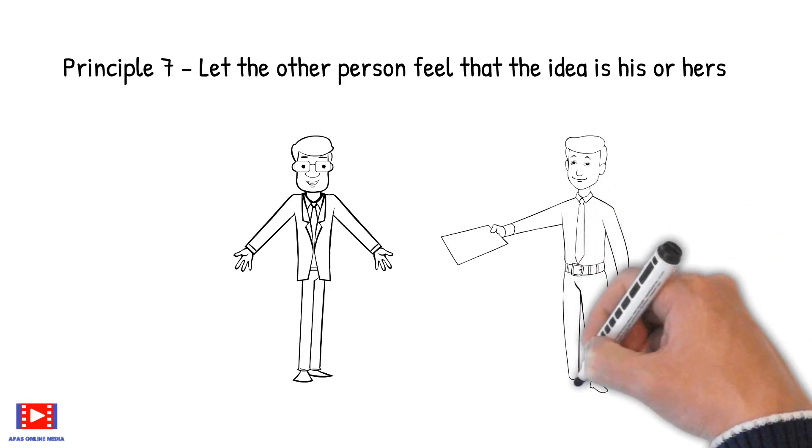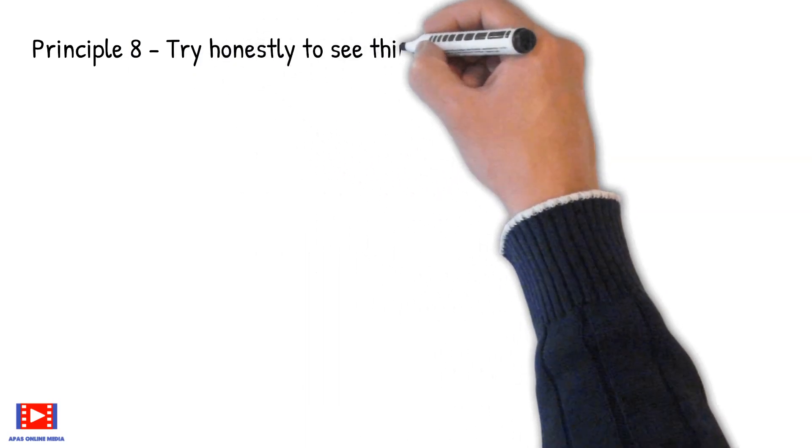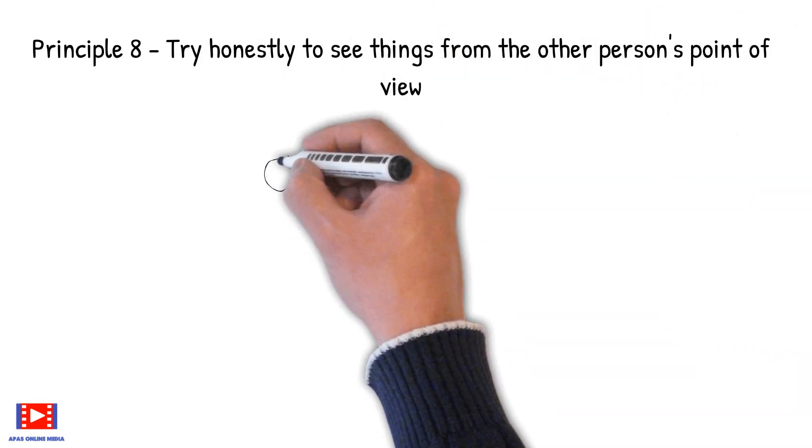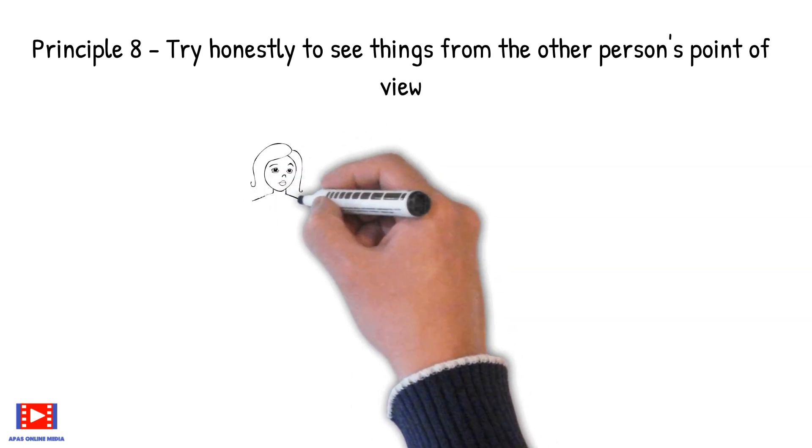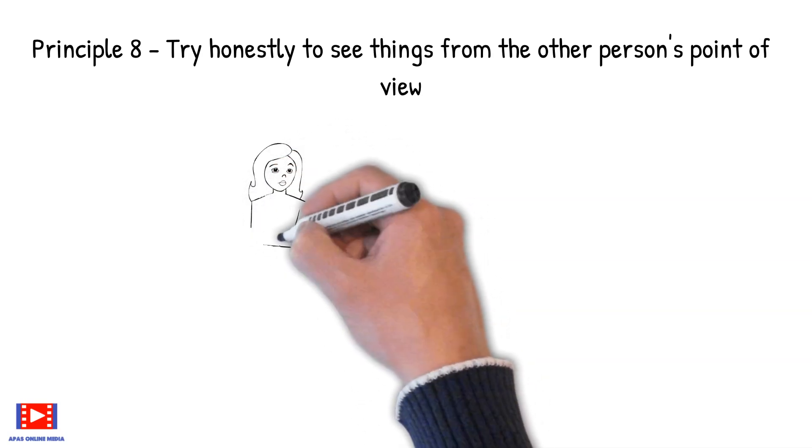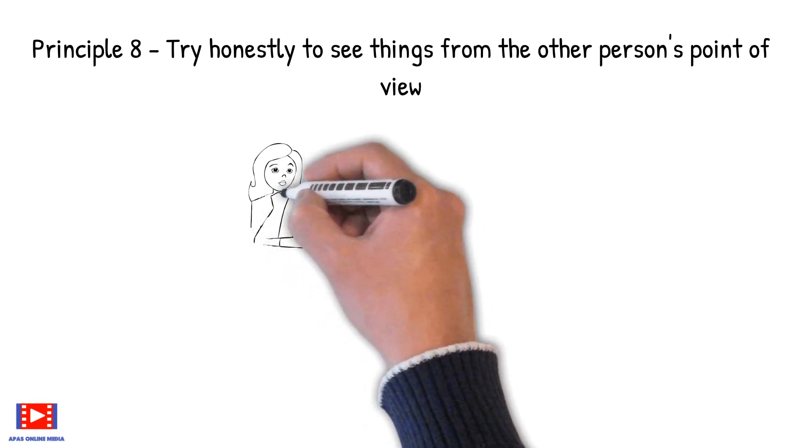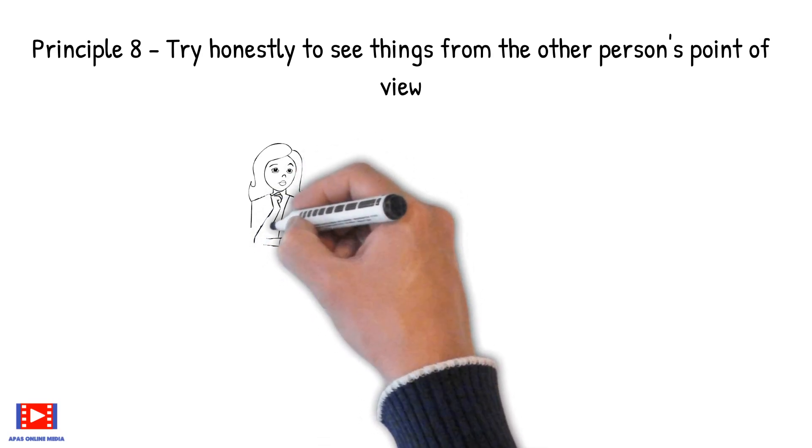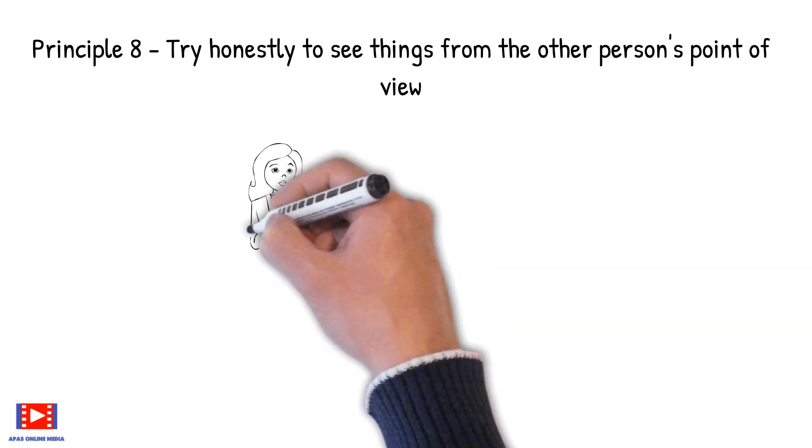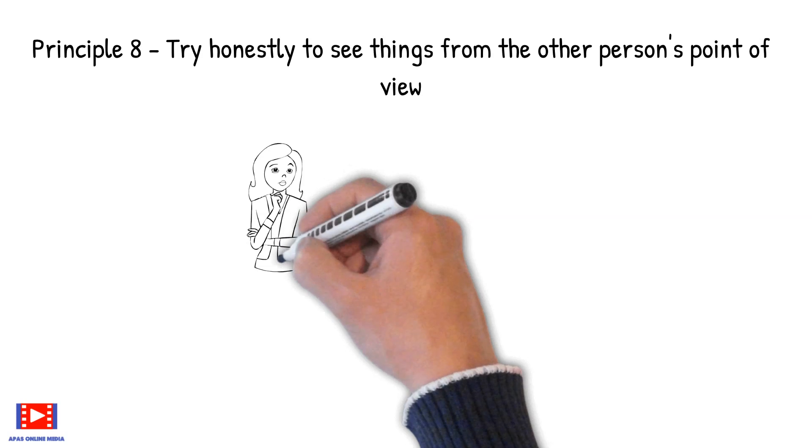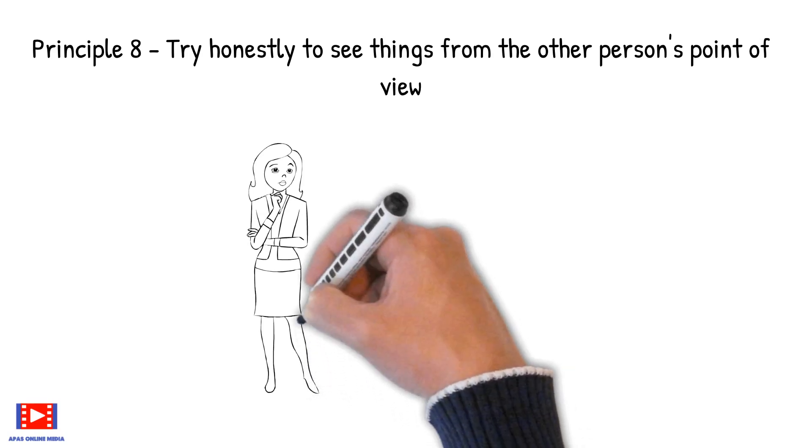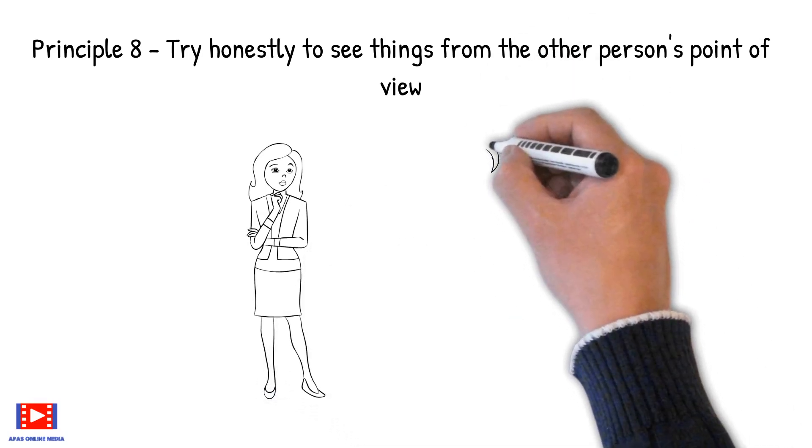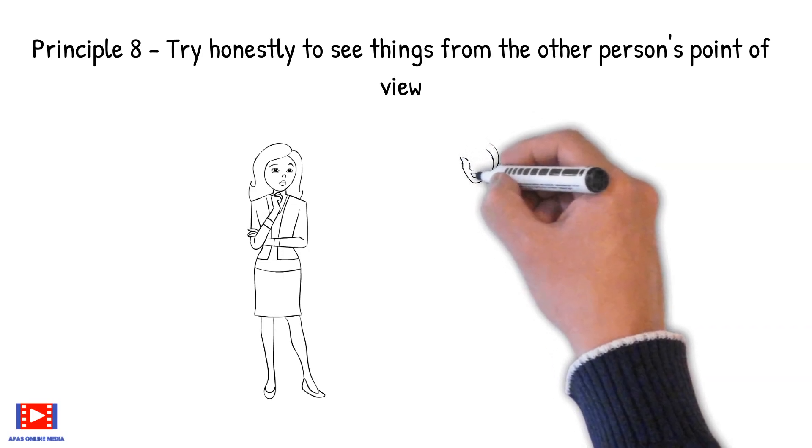Principle 8: Try honestly to see things from the other person's point of view. Remember that other people may be totally wrong, but they don't think so. Don't condemn them. Any fool can do that. Try to understand them. Only wise, tolerant, exceptional people even try to do that. There is a reason why the other man thinks and acts as he does. Ferret out the reason and you have the key to his actions, perhaps to his personality. Try honestly to put yourself in his place.